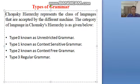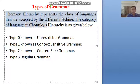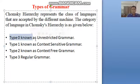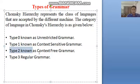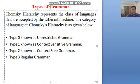Chomsky Hierarchy represents the class of languages that are accepted by different machines. The categories of language in Chomsky Hierarchy are: Type 0 (unrestricted grammar), Type 1 (context sensitive grammar), Type 2 (context free grammar), and Type 3 (regular grammar). These are the 4 types of grammars in Chomsky Hierarchy.